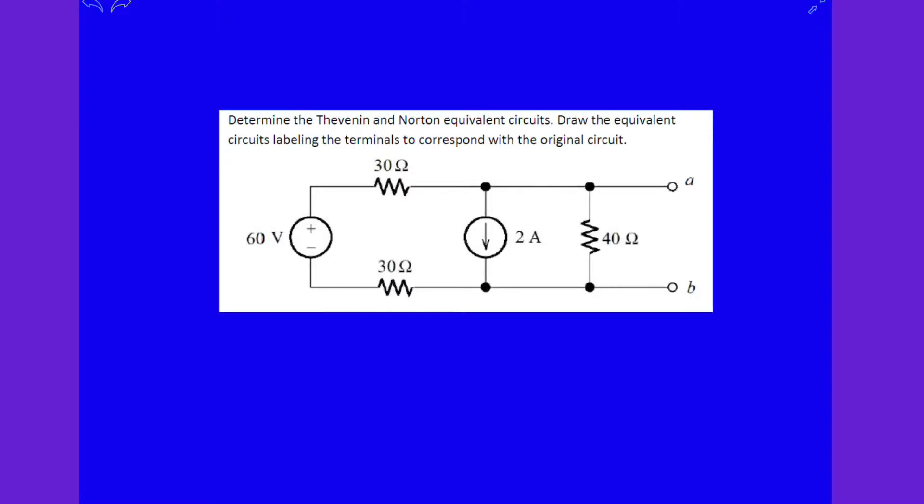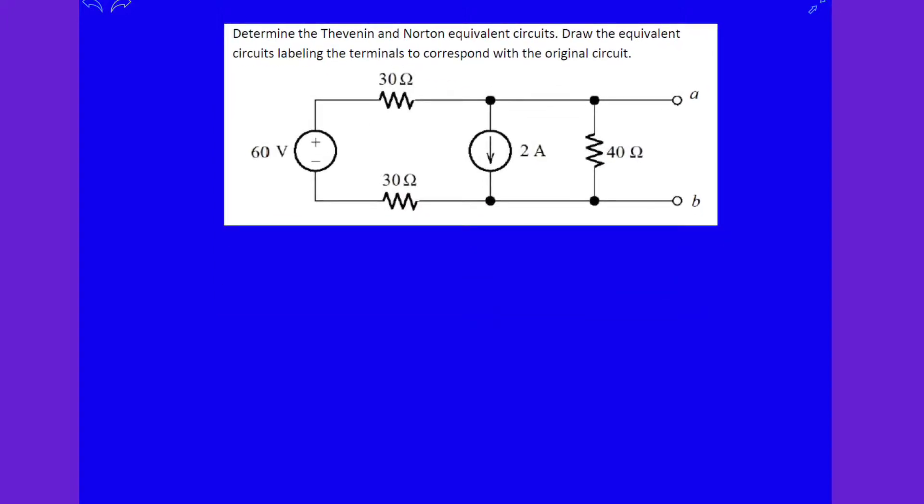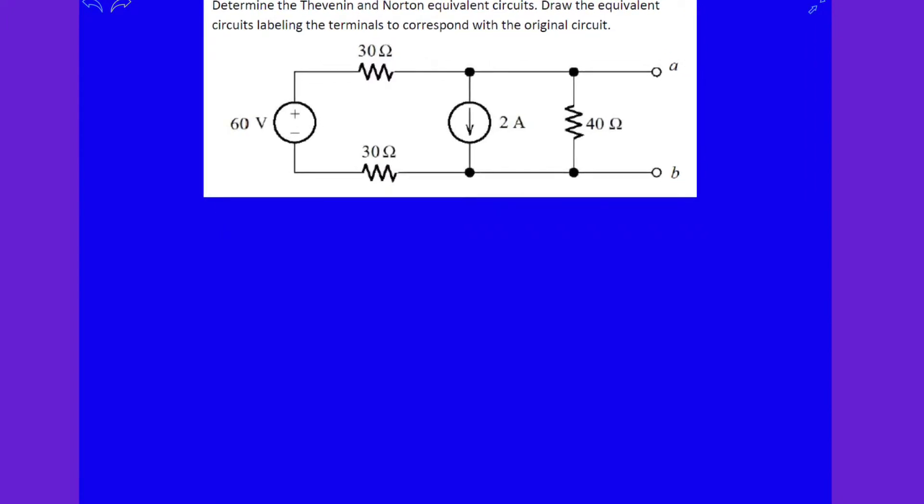Hi friends, let's solve this problem. Determine the Thevenin and Norton equivalent circuits. Draw the equivalent circuits labeling the terminals to correspond with the original circuit. Here it is - it's having a 60 volt source and a 2 amp current source.